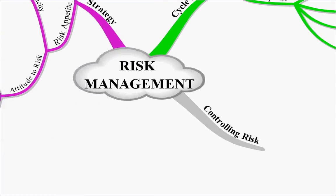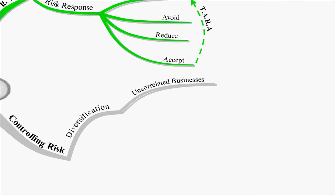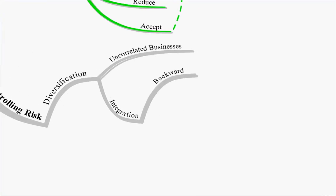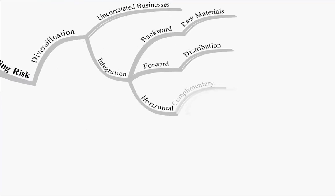To control risk, we may choose to diversify. If you diversify into an uncorrelated business, it means that if your core business activities take a hit, because the other business is uncorrelated, it shouldn't go down at the same time. The way to do this may be to integrate — backwards integration through your supply chain into raw materials, forward integration through distribution channels, or horizontal integration into complementary goods or potentially taking over a competitor.